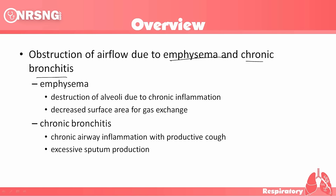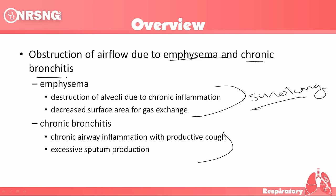Emphysema is a destruction of the alveoli due to chronic inflammation, and it decreases the surface area for gas exchange. A common cause of this is smoking. Our alveoli become destructed and of course gas exchange occurs in the alveoli, so if our alveoli are ruined, we're unable to have that gas exchange. Chronic bronchitis is chronic airway inflammation with a productive cough and excessive sputum production.